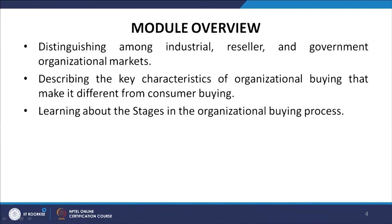Let us look at what will be covered in this module. We will start with distinguishing among industrial, reseller and government organization markets. Then we will describe the key characteristics of organizational buying that makes it different from consumer buying. Learning about the stages in the organizational buying process will be the third thing. It is important to understand individual consumer and organizational buying processes separately because the two entities act differently and have different kinds of decision-making processes.